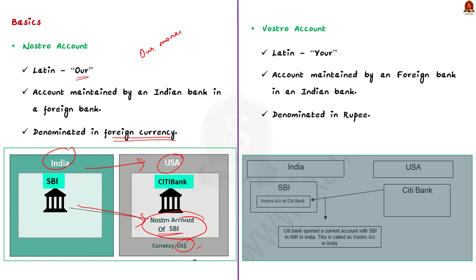The reverse of the Nostro account is the Vostro account. Vostro in Latin means 'your.' In the case of a Vostro account, a foreign bank maintains an account in an Indian bank, denominated in Indian rupees — meaning 'your money that is on deposit at our bank.'